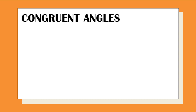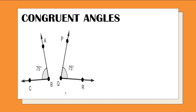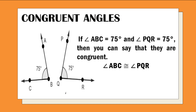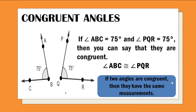Let us begin with congruent angles. We are given two angles here. If angle ABC is equal to 75 degrees and angle PQR is equal to 75 degrees, then you can say that they are congruent. In symbols, angle ABC is congruent — this is the symbol for congruent — to angle PQR. So, if two angles are congruent, then they have the same measurements.